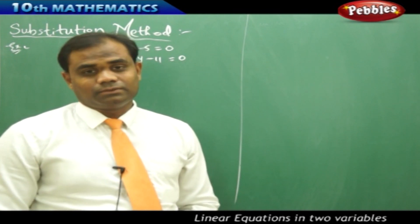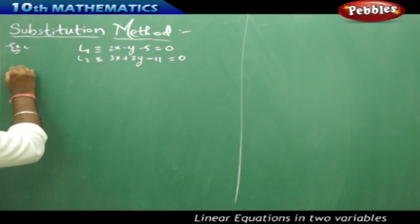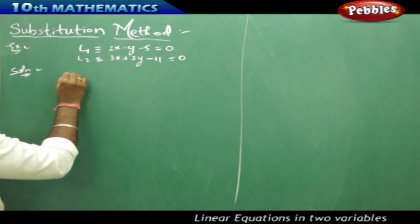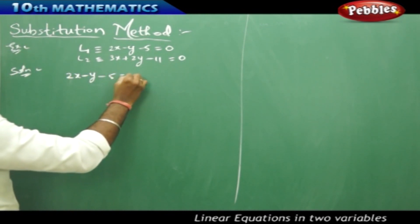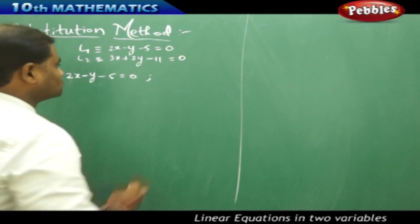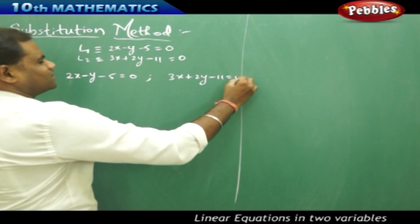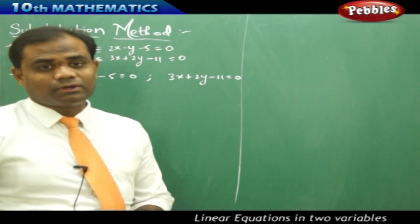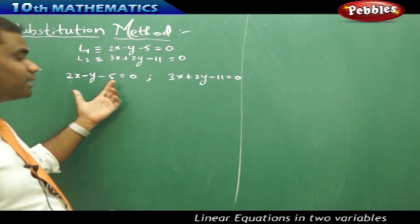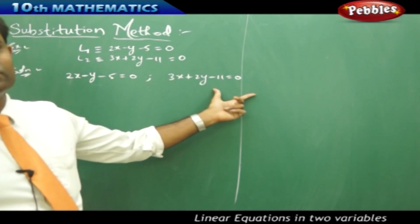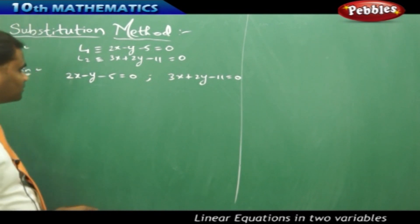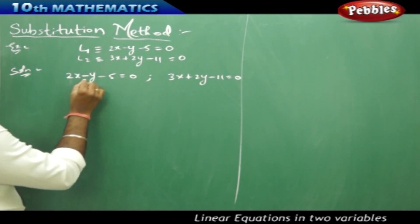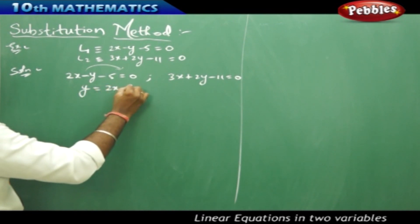To start with, I take each of the lines separately. My line L1 is 2x minus y minus 5 equals 0, and my line L2 is 3x plus 2y minus 11 equals 0. The substitution method requires bringing one variable into the form of the other. Since the coefficient of y is 1 in L1, I rearrange to get y equals 2x minus 5.